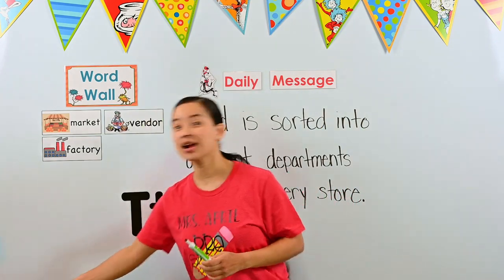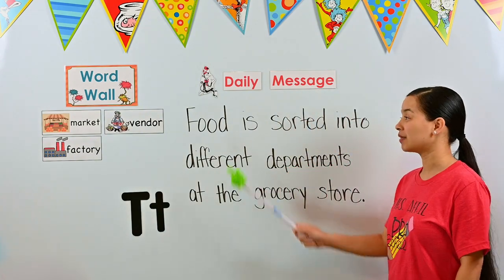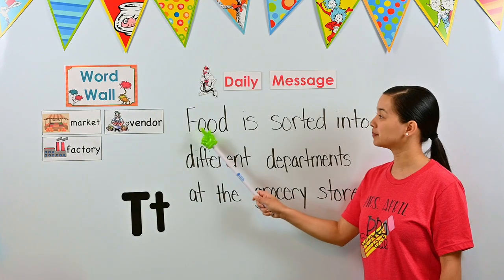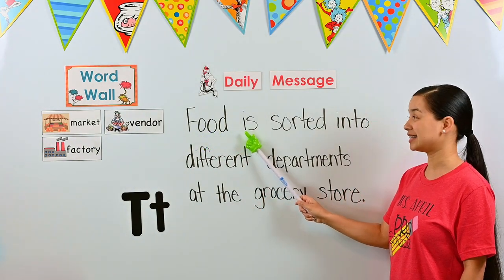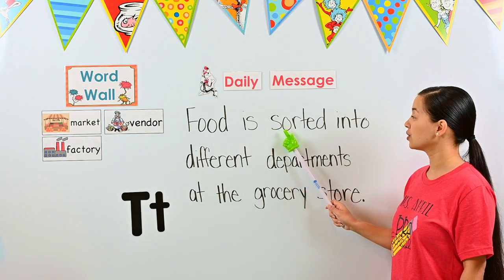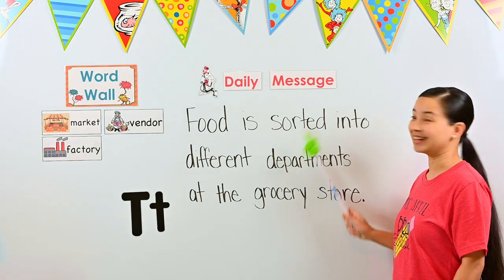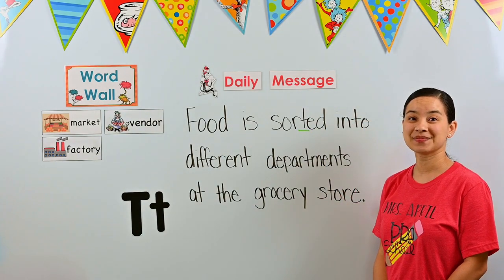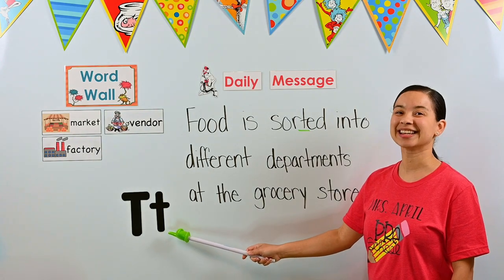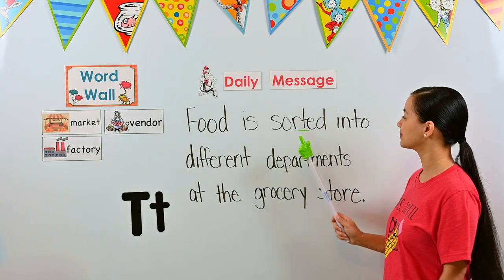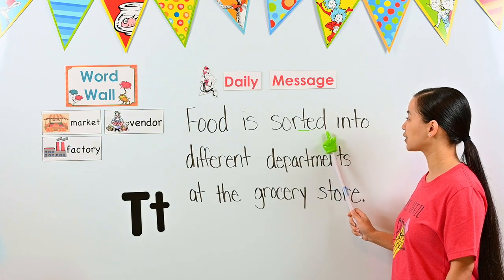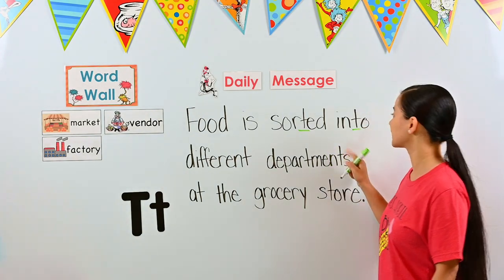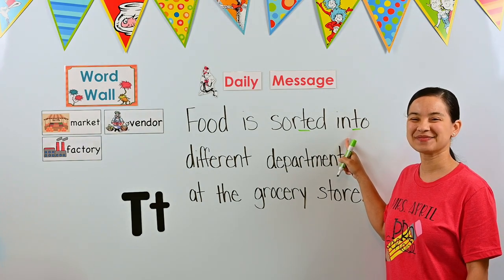Let's follow along our message and see if we can find all of the T's together. We have a lot of T's in our message today. We'll start at the beginning — at the top on the left — and move to the right, just like we read. A T is a tall letter: a straight line down with a line at the top or a line in the middle. Oh look, here's a T. Let's underline it. Is this an uppercase T or a lowercase T? If you said a lowercase T, you are correct. Let's see if we can find more T's. Oh look, here is another T. Let's underline it — this is another lowercase T.